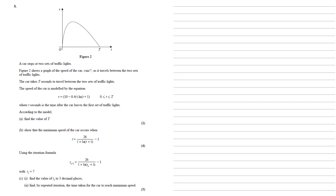Where t seconds is the time after the car leaves the first set of traffic lights. According to the model, we need to find the value of capital T. So here's our equation, v equals 10 minus 0.4t times ln t plus 1. We're looking to find t, which we can see from the graph is when the velocity is zero.